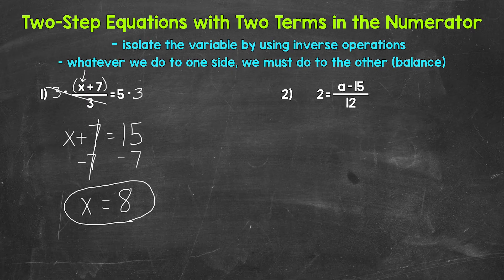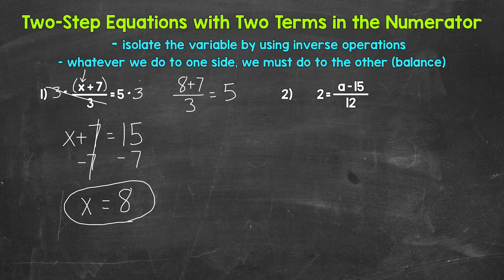X equals eight — that's our solution. We can check it by plugging eight in for x: eight plus seven divided by three equals five. Starting with the numerator, since the fraction bar acts as a grouping symbol, eight plus seven is 15. Then 15 divided by three gives us five. That's correct — x equals eight.